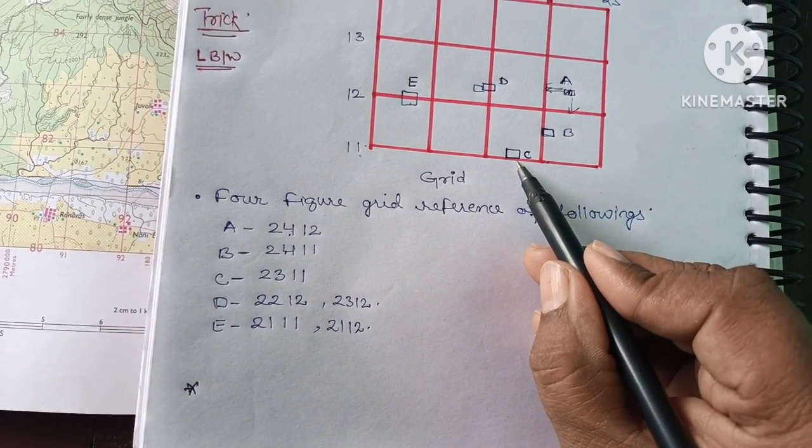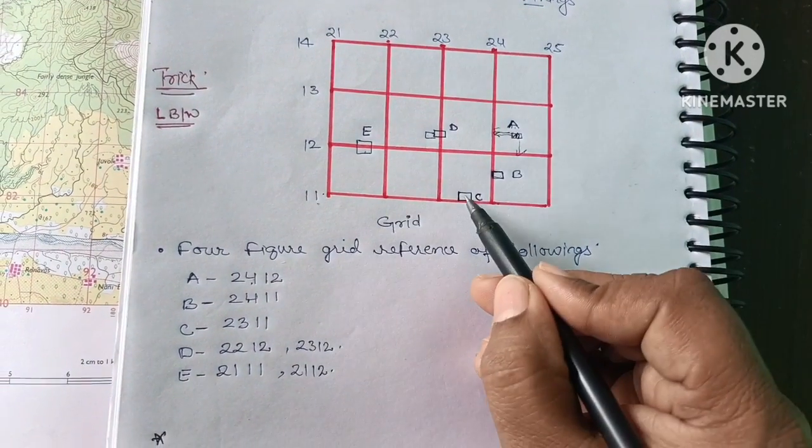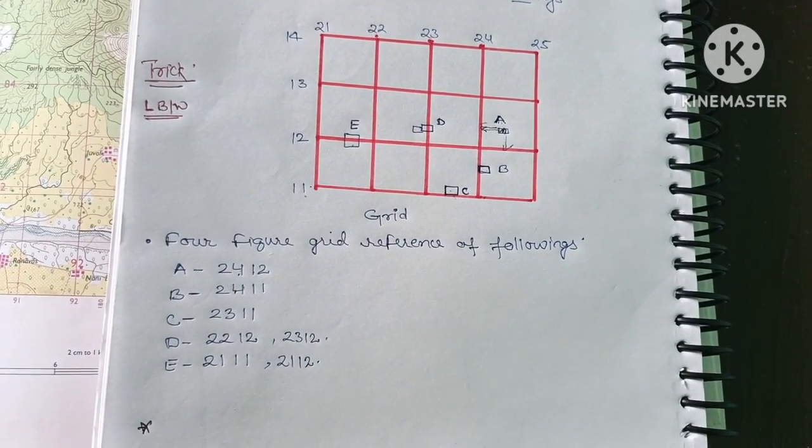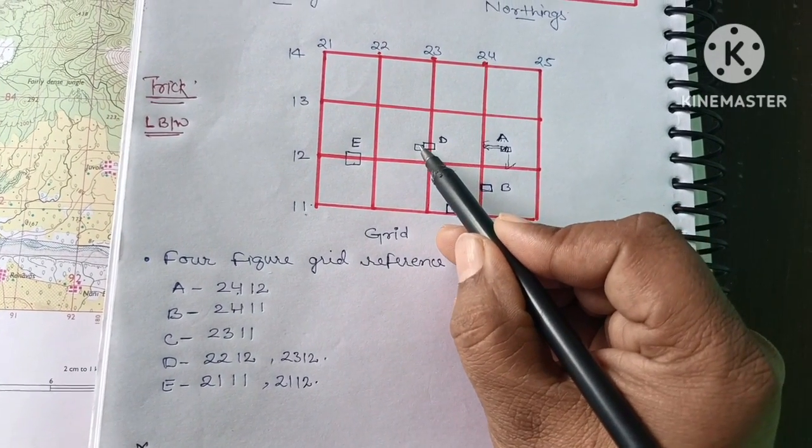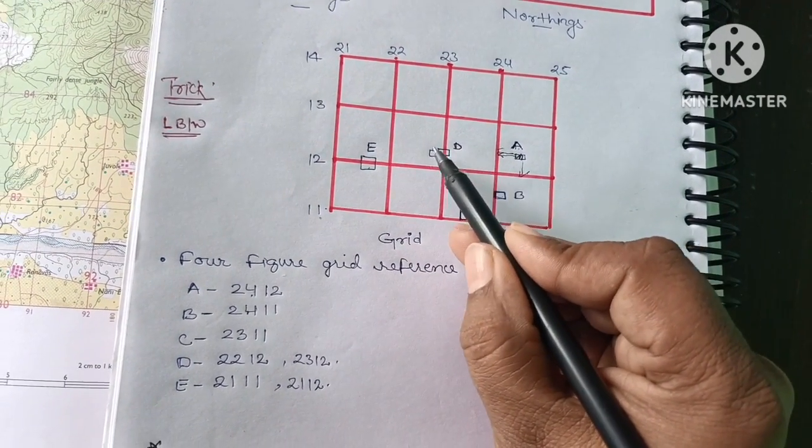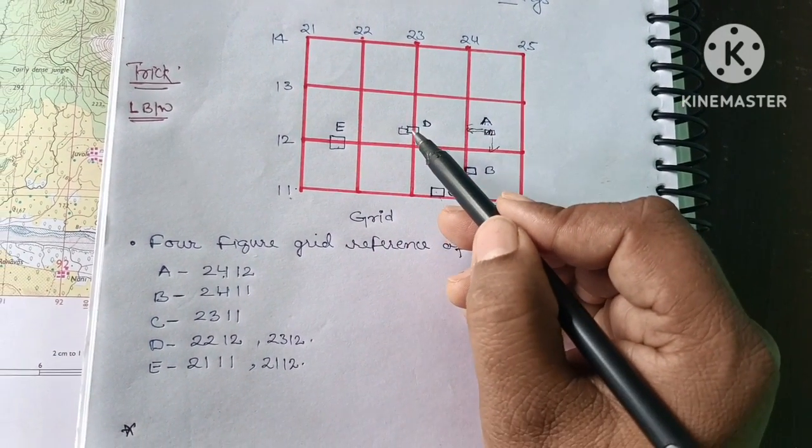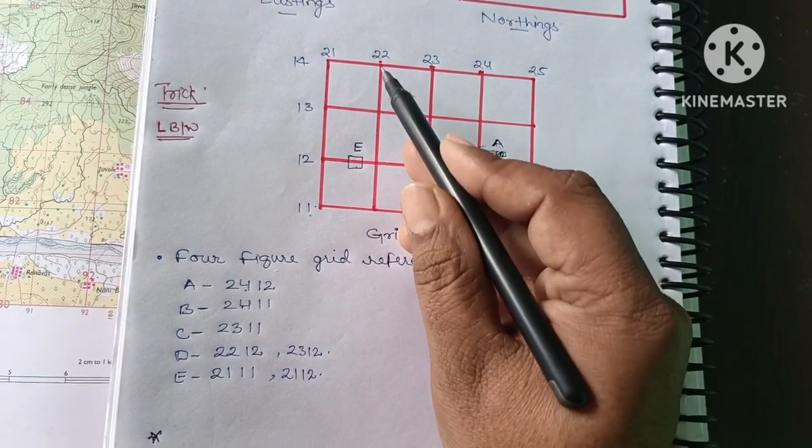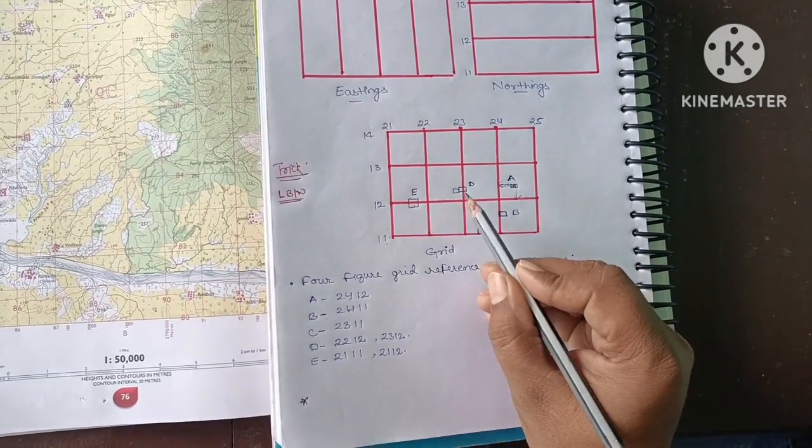So now we are going for the C. Its left line value is 23. And bottom line value is 11. Now here we are going for point D. Since it lies in two squares, so the left value of it is 23. And bottom line value is 22.